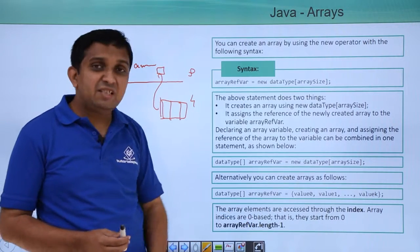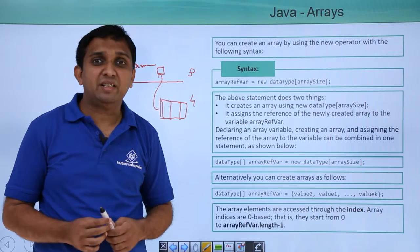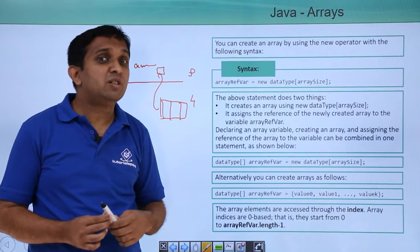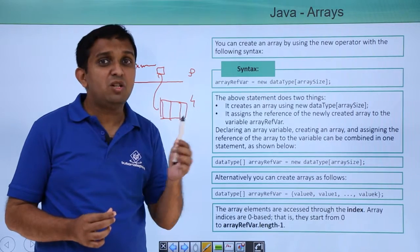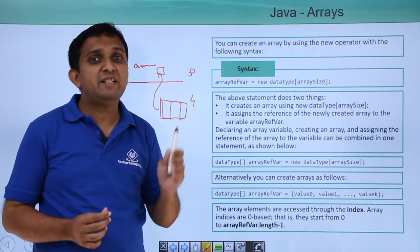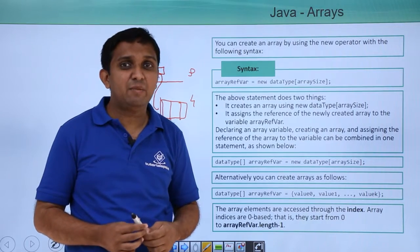There is one property which is the length property for the array. The length property will give the length of the array. If I want to access the array elements, they can be accessed from 0 to length minus 1. Array index always starts with 0. The last element will be at length minus 1.